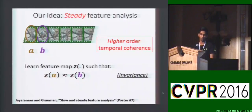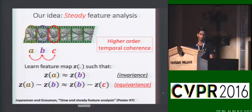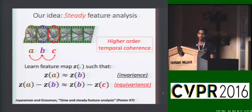Our key idea comes from the observation that slow feature analysis is basically only a first-order approximation to a more general property of temporal coherence. You can learn higher-order temporally coherent features — for instance, a second-order temporally coherent feature would enforce that feature transitions are consistent across consecutive frames. As we show in the paper, first-order temporal coherence corresponds to invariance and second-order temporal coherence corresponds to another desirable property called equivariance.